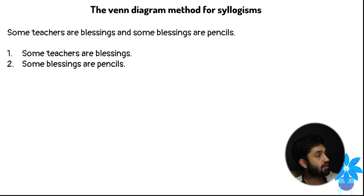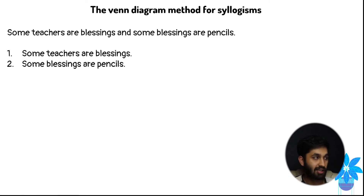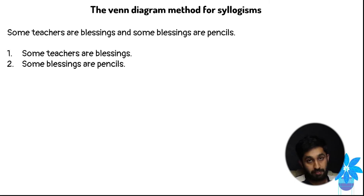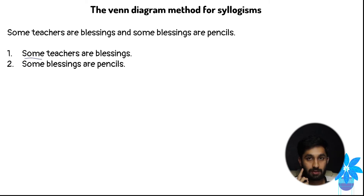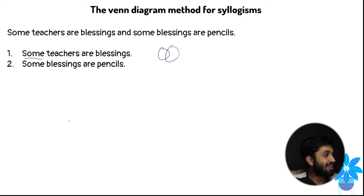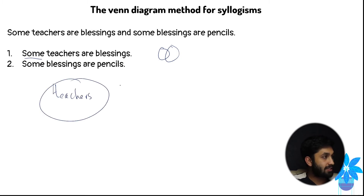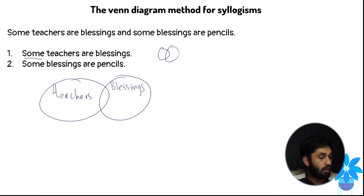Now a third example with two statements: 'some teachers are blessings' and 'some blessings are pencils.' Let's break it down bit by bit. For 'some teachers are blessings,' the keyword is 'some' — draw two circles overlapping: teachers and blessings. That's diagram one. For 'some blessings are pencils,' same keyword, same diagram: blessings and pencils overlapping.